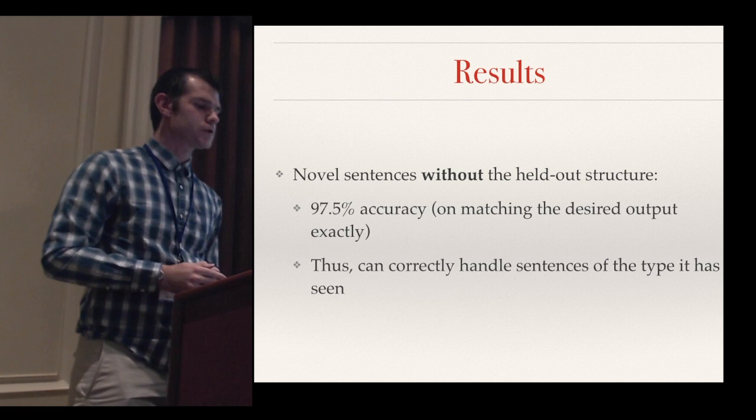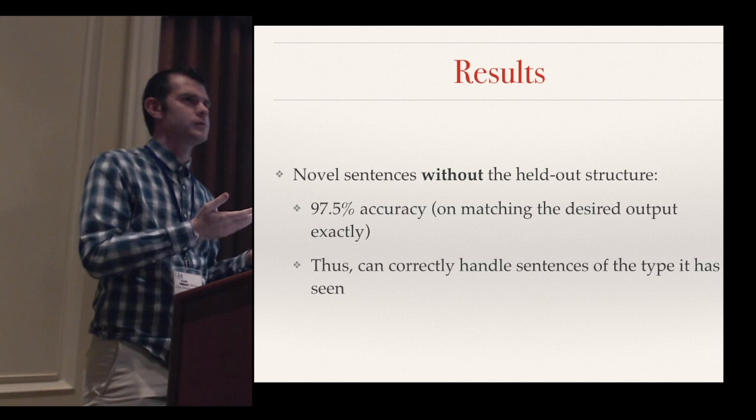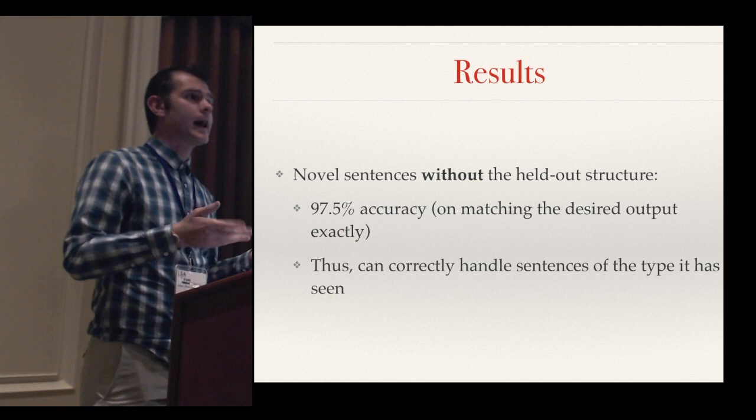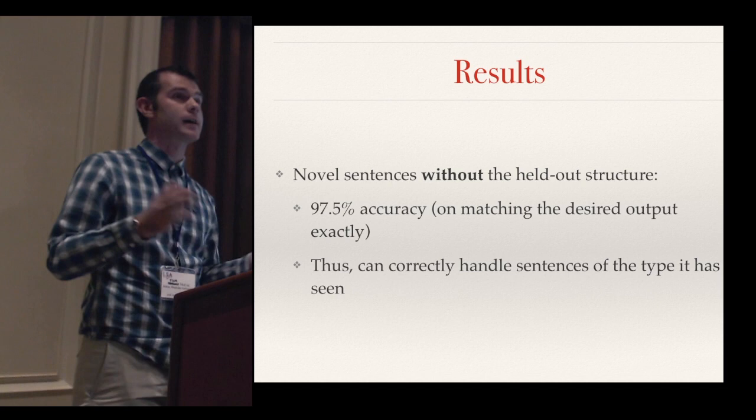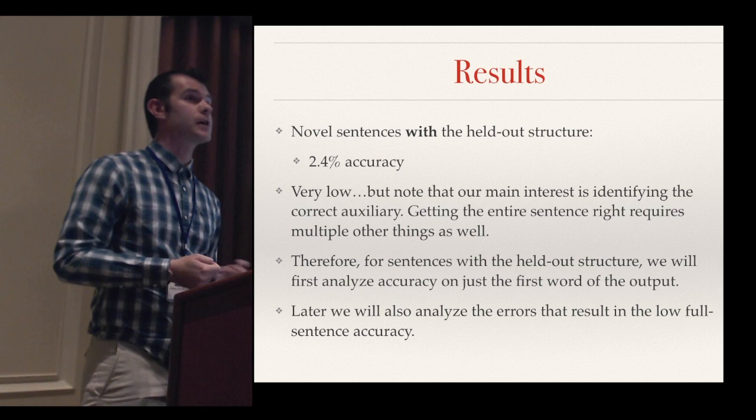For the results: considering only novel sentences without the held-out structure — no relative clauses on the subject — the networks perform very well. On average across 100 networks, they achieve 97.5% accuracy on predicting the output sentence exactly right, clearly demonstrating that the networks are doing a good job learning the types of sentences they've been exposed to. But when we move to the held-out sentence structure, accuracy plummets to 2.4%.